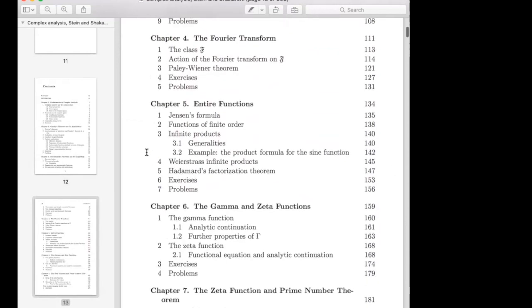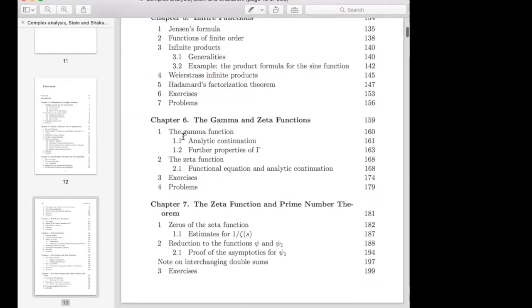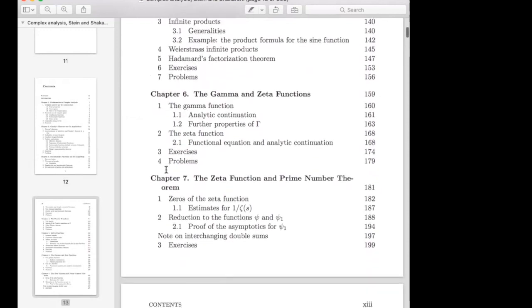Then they have chapters on entire functions, which is like Greene and Krantz's chapters eight and nine, and the material on gamma, beta, zeta, and the prime number theorem right here in the middle.